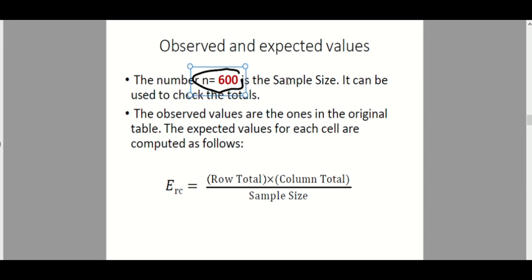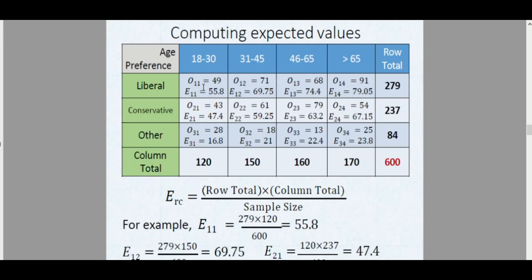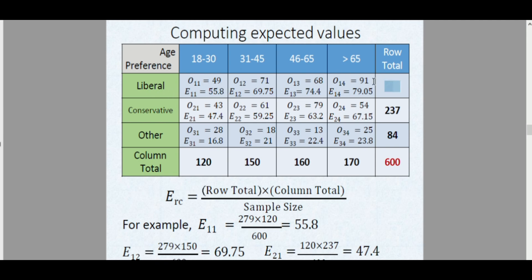For example, E₁₁ — the expected value for row one, column one — is computed as: row total (279) times column total (120), divided by the sample size 600. Using your calculator, 279 × 120 / 600 = 55.8.